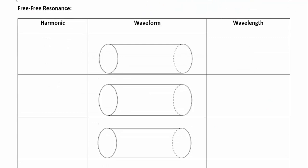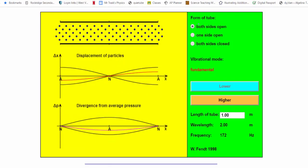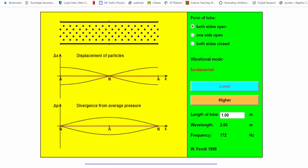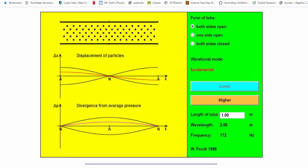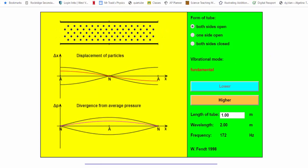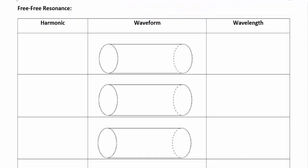Last is the free-free system, where both ends of the tube are open — like a flute, where you blow into one end and the other end is also open. In this case, both ends are antinodes, and the center is a node. The first harmonic has an antinode at one end, a node in the center, and an antinode at the other end.